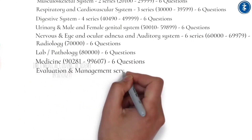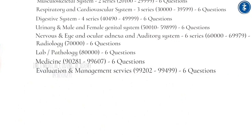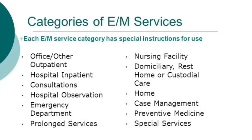The Evaluation and Management (E&M) section (codes 99201–99499) contributes 6 questions covering physician and hospital department services including office and outpatient services, hospital inpatient services, consultations, emergency services, prolonged services, nursing facility, domiciliary and rest home services, chronic care management, preventive medicine, and other special services.